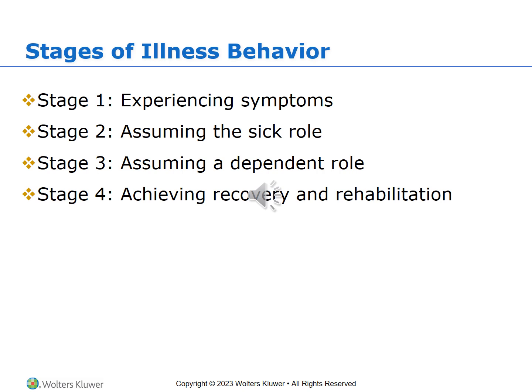Stage 3, on page 59, is assuming the dependent role. This stage is characterized by the patient's decision to accept the diagnosis and follow the prescribed treatment plan. The person may be hospitalized and receiving treatment, or they may receive treatment and go home. The optimum outcome expected for both caregivers and families is to get well and resume normal activity. In the dependent role, the patient receives care until the illness is resolved — serious conditions like a heart attack or stroke may require initial hospitalization.